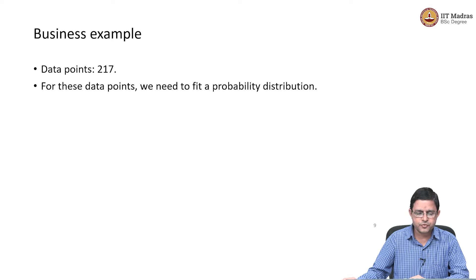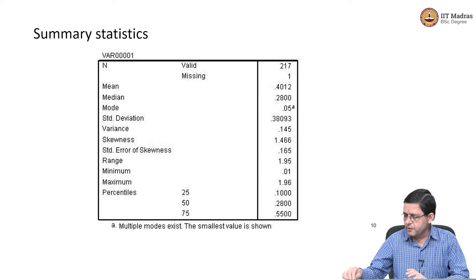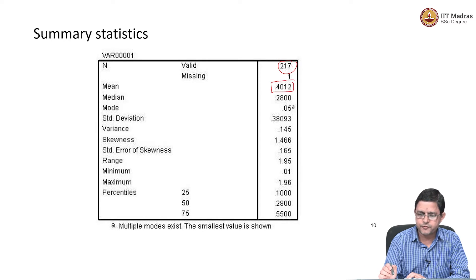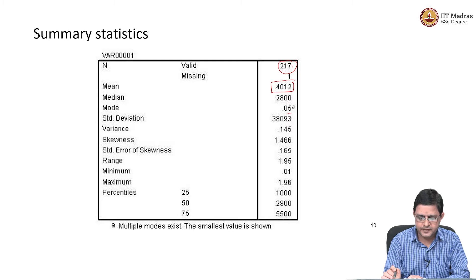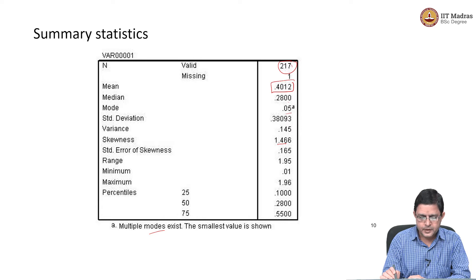Let me tell you the properties of these 217 values — a summary statistics. The mean of these 217 values is 0.40. Median and mode values are different; apparently there are multiple modes. Standard deviation is 0.38, skewness is 1.46.